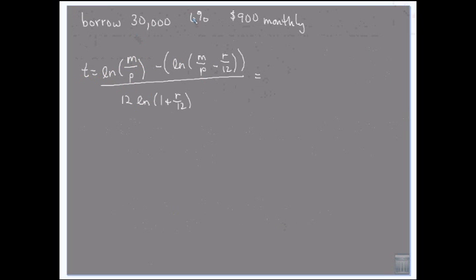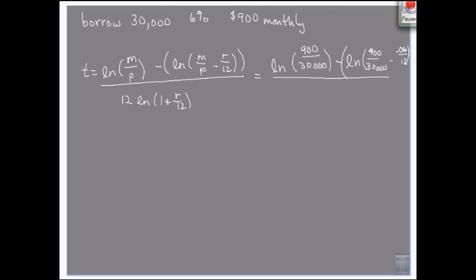So we're going to borrow $30,000 at 6% interest. We can afford $900 a month. We want to know how long it's going to take us to pay it off. So we've got $900 a month divided by $30,000 minus the natural log of...